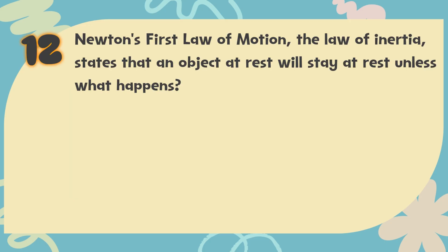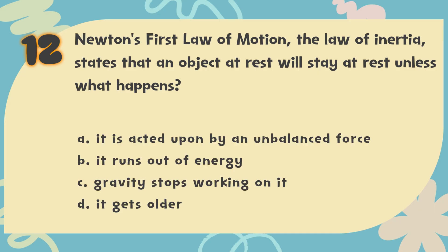Number 12. Newton's first law of motion — the law of inertia — states that an object at rest will stay at rest unless what happens? The choices are: A. It is acted upon by an unbalanced force, B. It runs out of energy, C. Gravity stops working on it, D. It gets older.